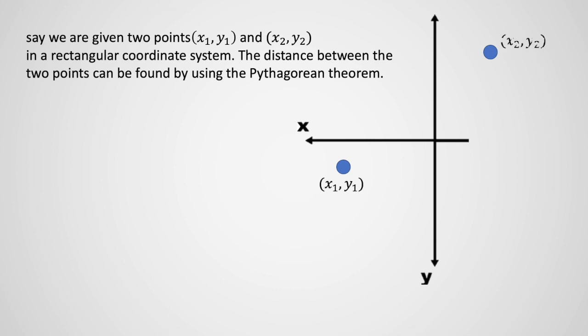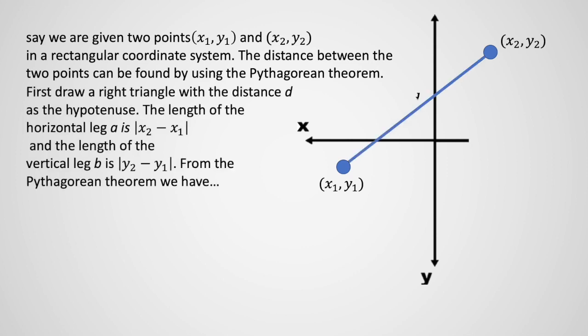Say we are given two points, x sub 1, y sub 1 and x sub 2, y sub 2 in a rectangular coordinate system. The distance between the two points can be found by using the Pythagorean theorem. First, draw a right triangle with the distance d as the hypotenuse. The length of the horizontal leg A is the absolute value of the difference of x, and the length of the vertical leg B is the absolute value of the difference of y.